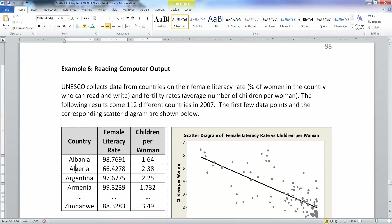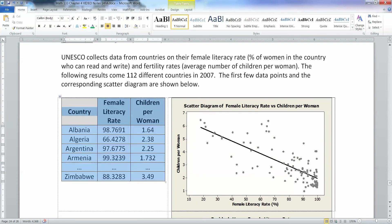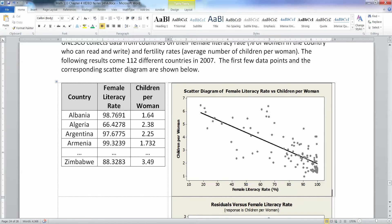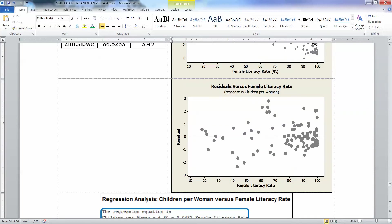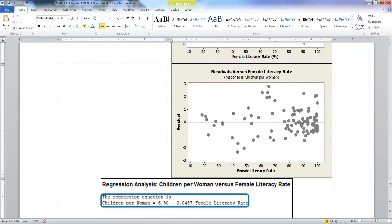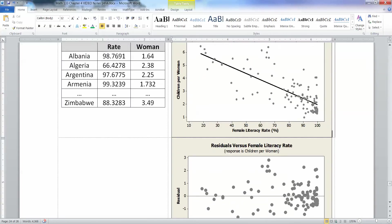The first few data points and the corresponding scatter diagram are shown below. So I'm not giving you all 112 countries. You're going to have to use the computer output and answer questions. Here's a scatter diagram that shows all 112 countries. And you can see there's a whole clump of countries over here on the right, where almost 100% of women can read and write. So you can imagine Sweden might be over there. That's the female literacy rate, the percentage of women that can read and write. That's the children per woman. That's the scatter diagram. And here's the residual plot, which is the plot of the errors off of that regression line that we see up here.